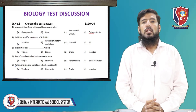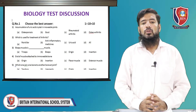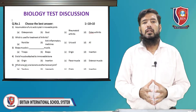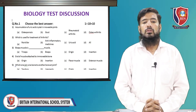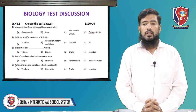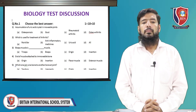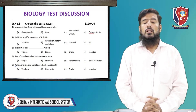MCQ 3: bicep muscle — which type of muscle is the bicep? The bicep muscle is basically a muscle that is both a flexor muscle and an extensor muscle. The correct option is flexor muscle.